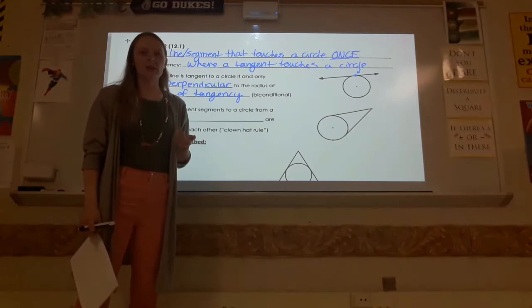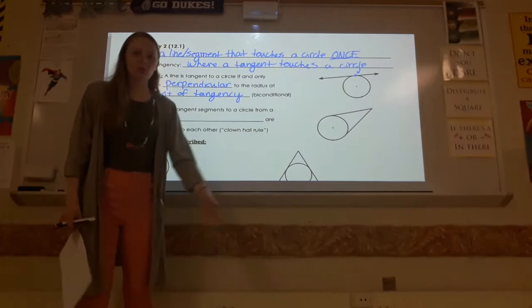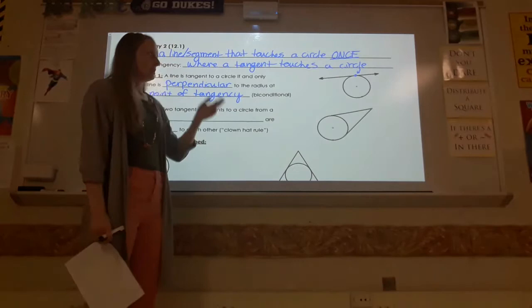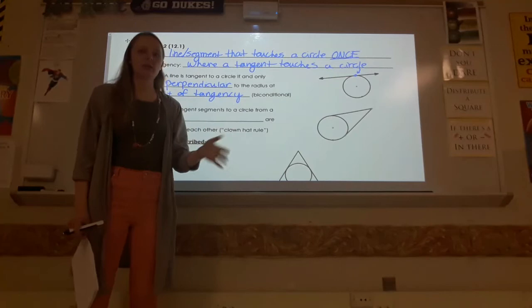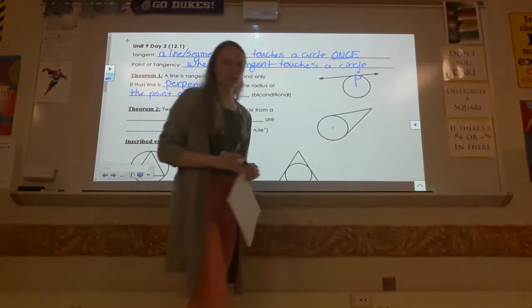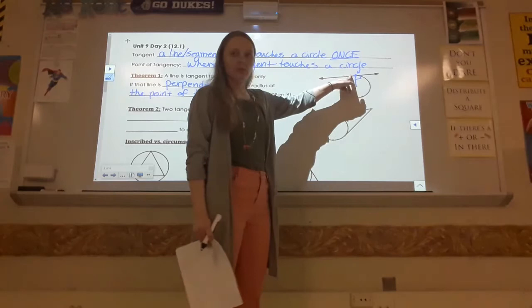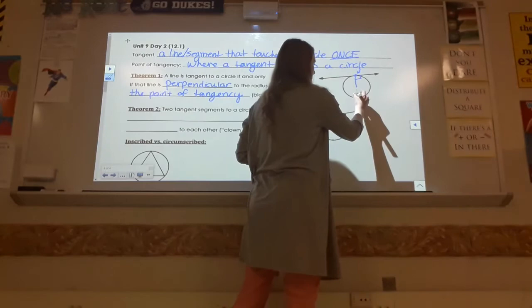Once you know it's a tangent already, you can then say there's a right angle, therefore solve using Pythagorean theorem or trig or something like that. Or you could go the other way around where you may not know it's a tangent to begin with, but once you see that the radius is perpendicular to that line, you can conclude that it was a tangent. In an illustration, you have the tangent, you have the radius, the point where they meet is the point of tangency, and they create that right angle there.